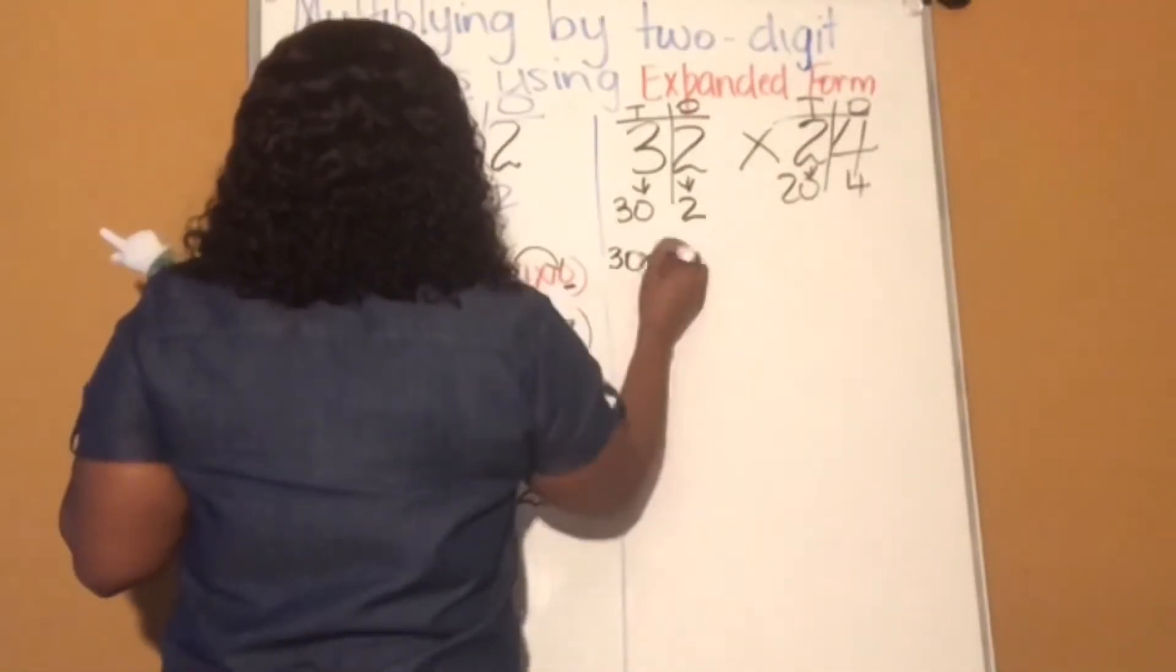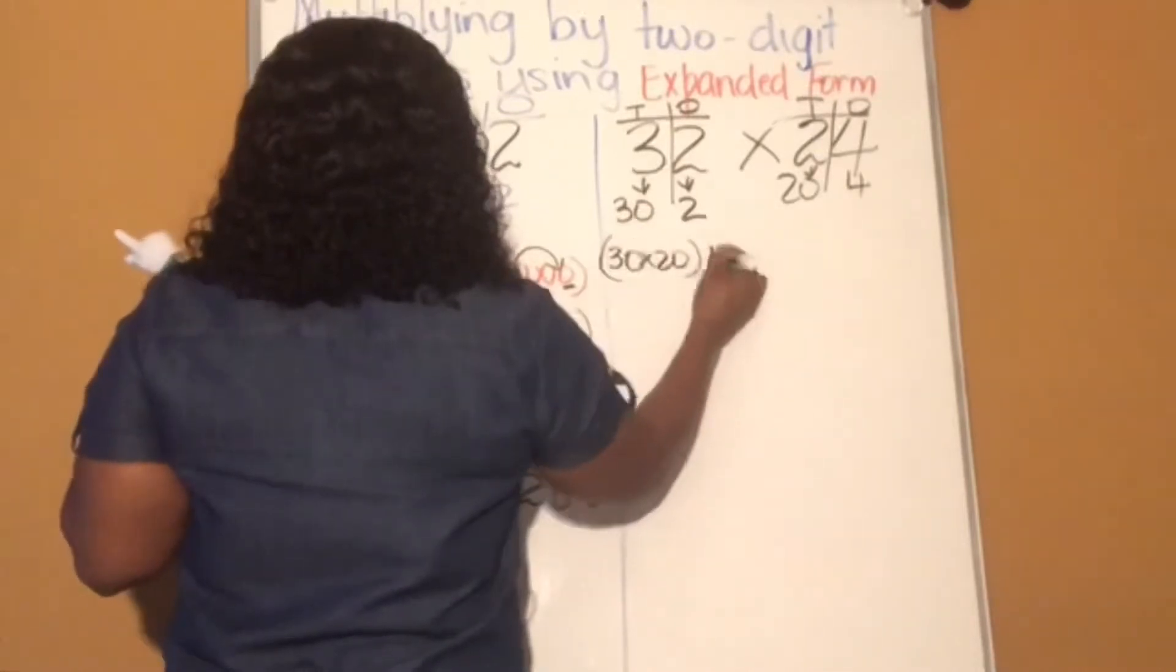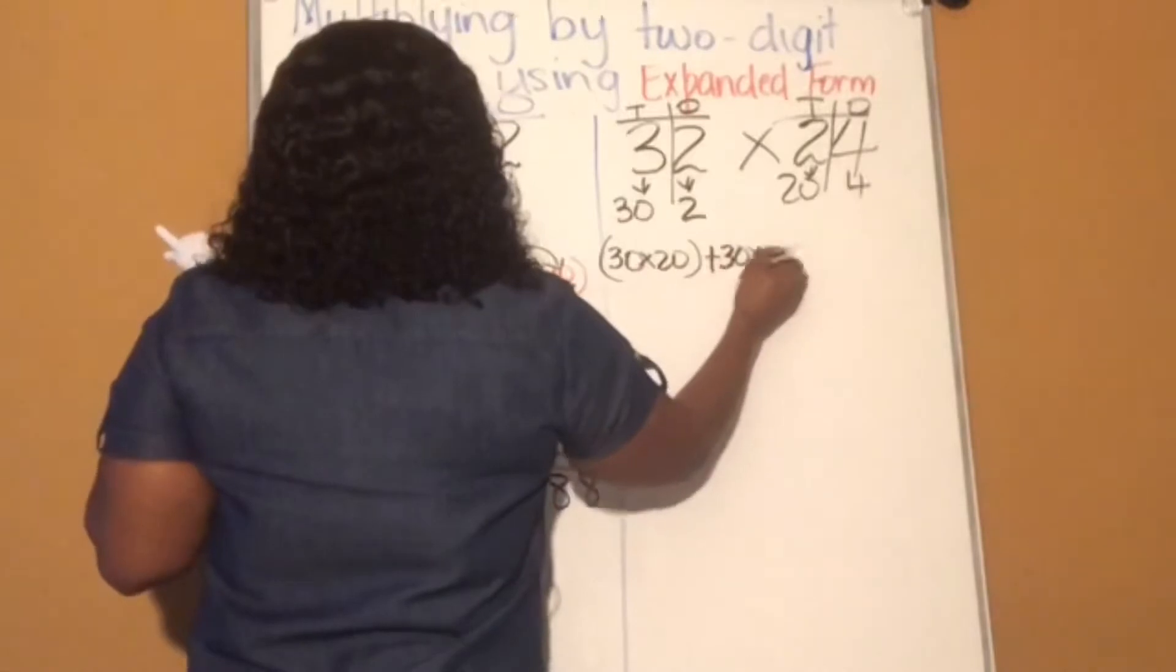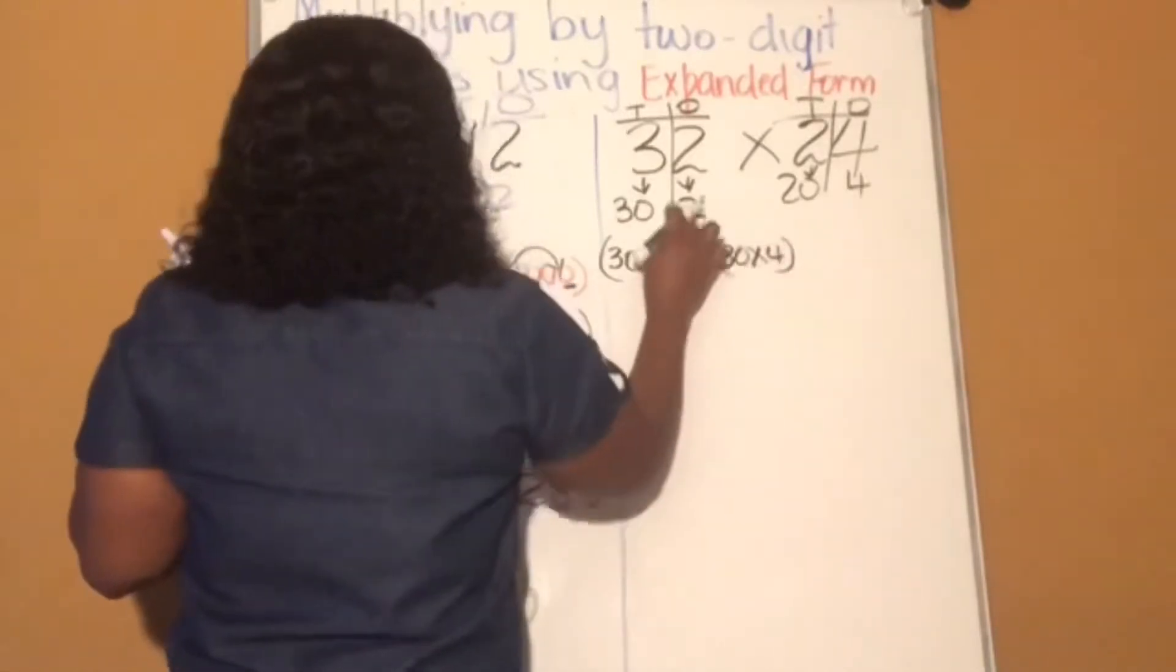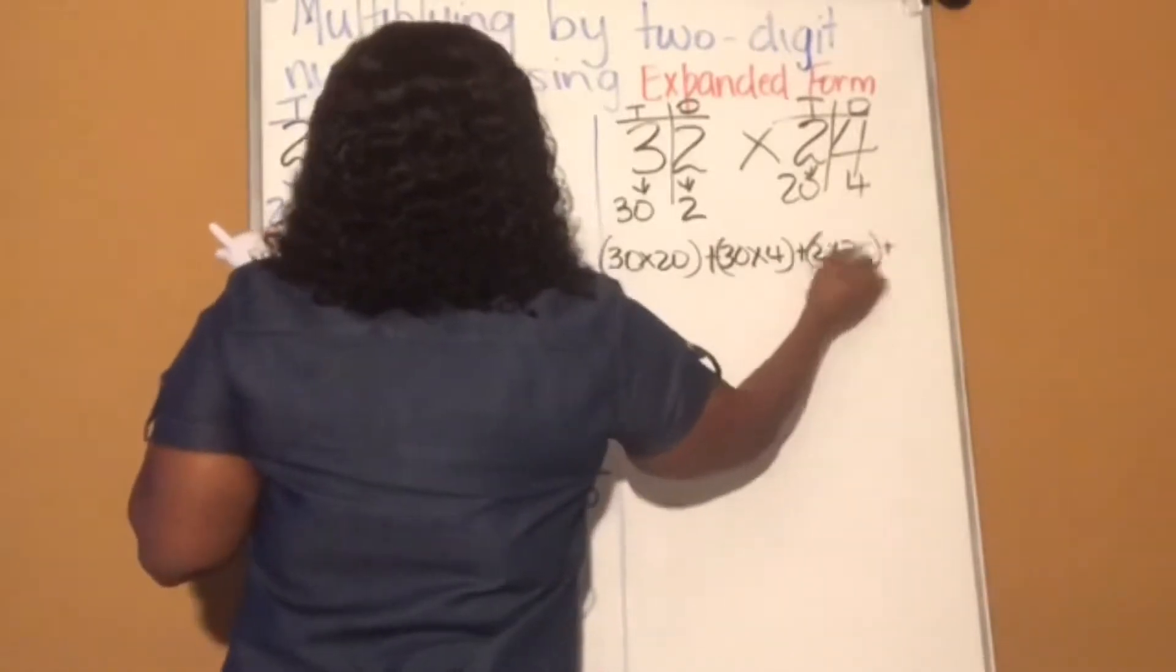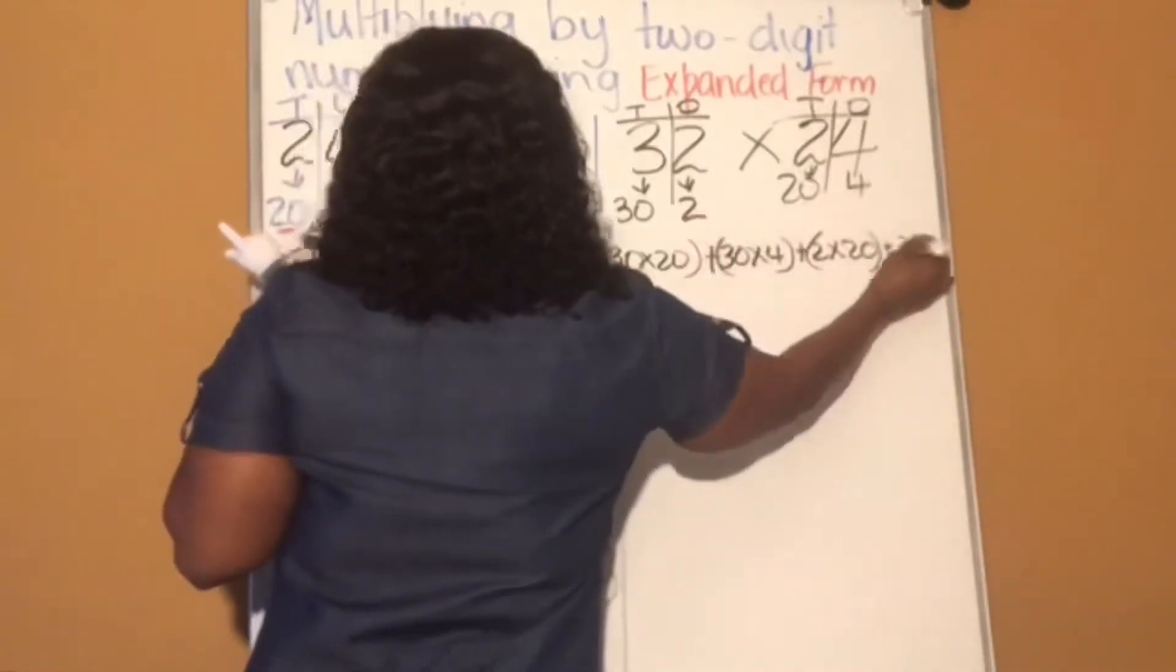30 times 20, bracket, plus 30 times 4. Bracket, then 2 times 20, bracket, then 2 times 4.